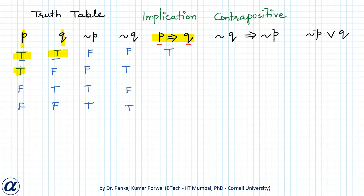The second row is p is true and q is false, so the implication is false — because the implication says that when p is true, q will follow as a consequence, which is not the case here, so the implication is false.